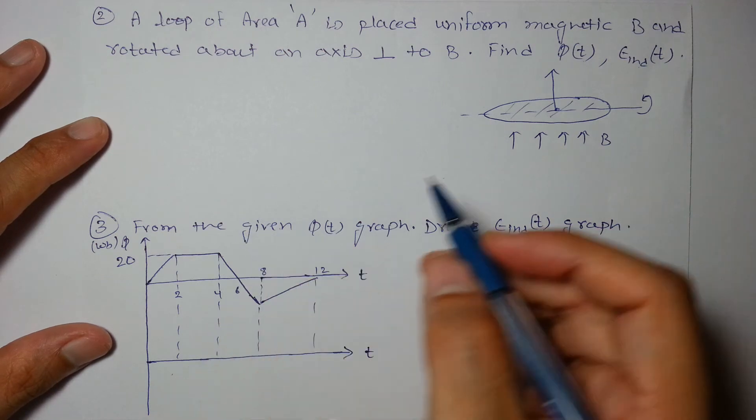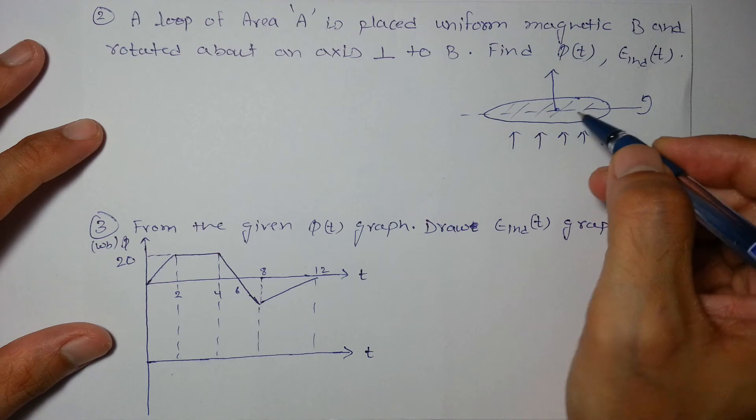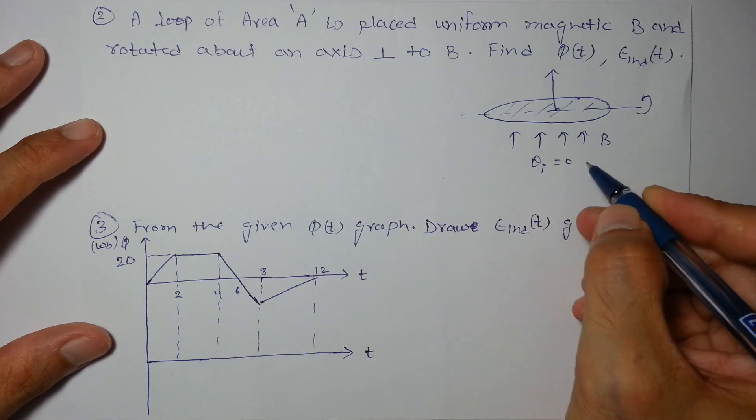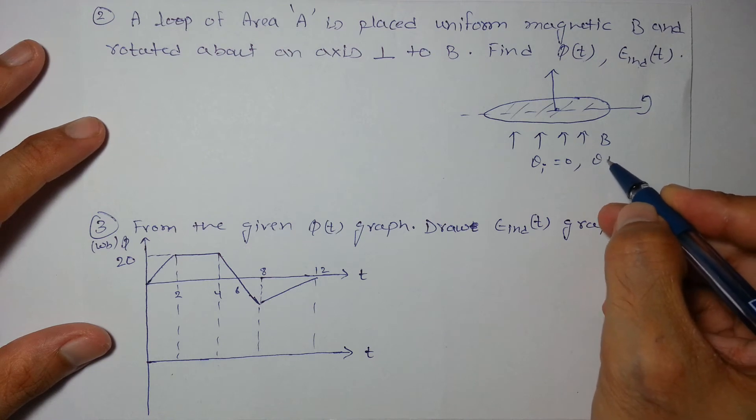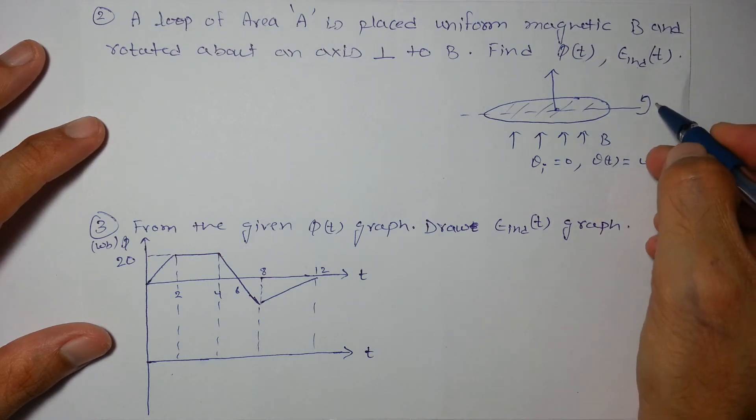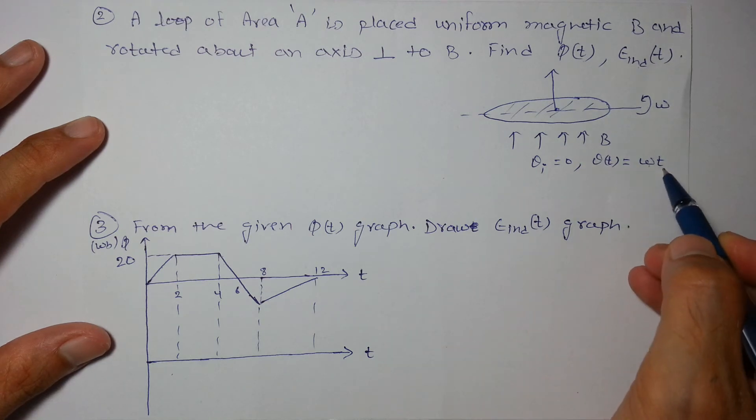So when it is rotated by an angle θ, obviously initial angle θ_initial we are assuming to be 0, θ as a function of t will be ωt, as it will rotate by an angle ωt in time t.